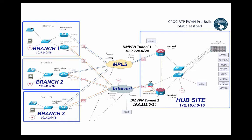Branch two has one router — also a 4300 — but it has two links off that one router: one link to the MPLS and one link to the internet. The addressing is 10.2/16. Branch three is a 4451, also one router at the branch with one leg in MPLS and the other over the internet, with addressing of 10.3/16.